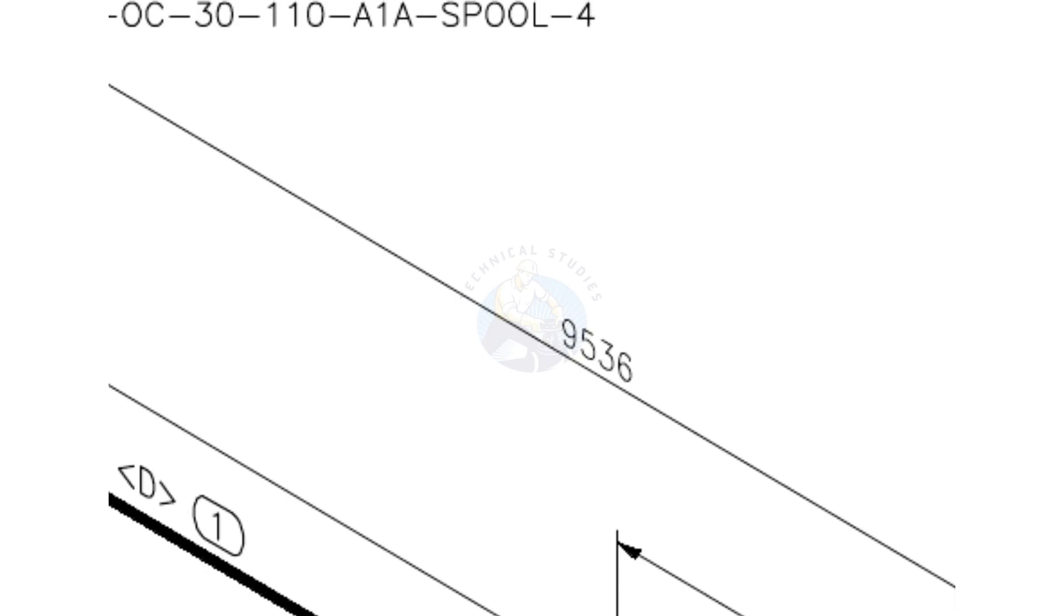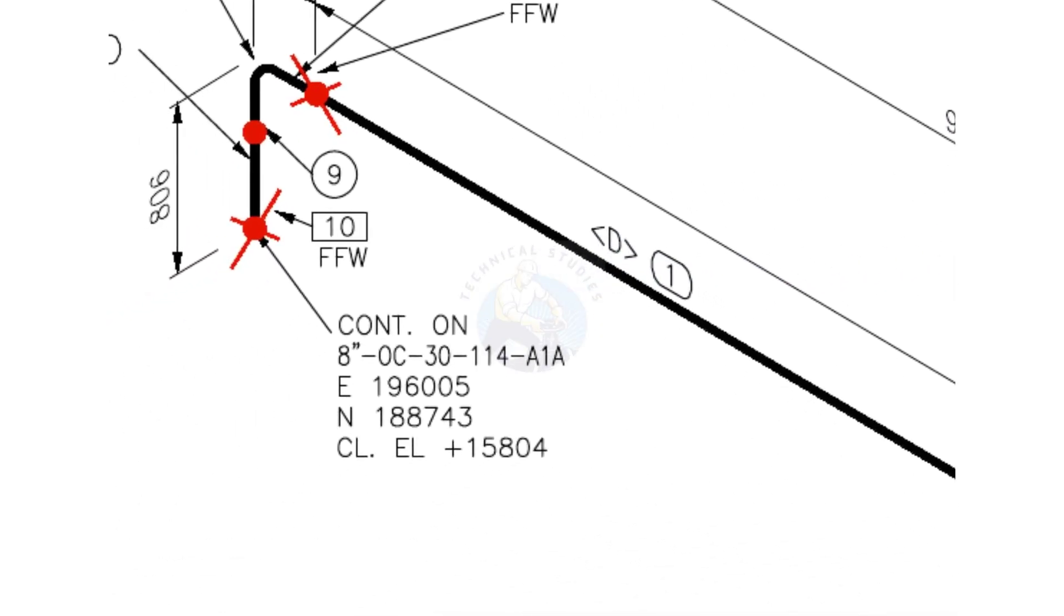Let us check the diameter of the pipe. What is the item number? Item number is 1.